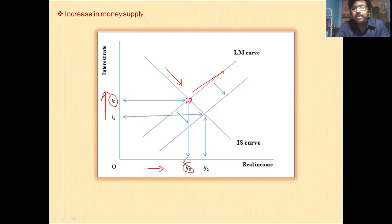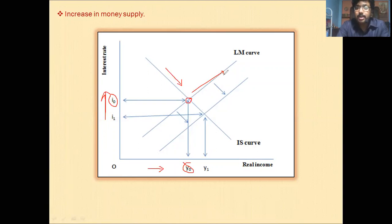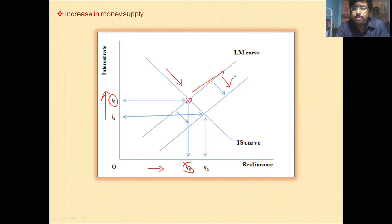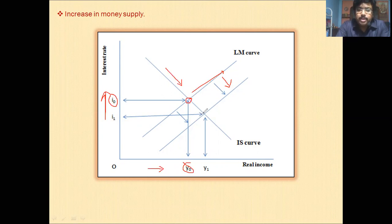Now, if the money supply increases — money supply is exogenously determined — if it is increased, the LM curve will shift rightward. You must remember, if there is an increase in money supply, the LM curve will shift to the right. The LM curve shifts to the right along the IS curve and the new equilibrium will be established here.